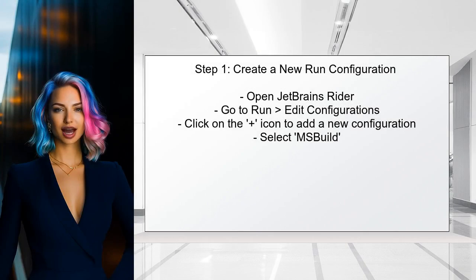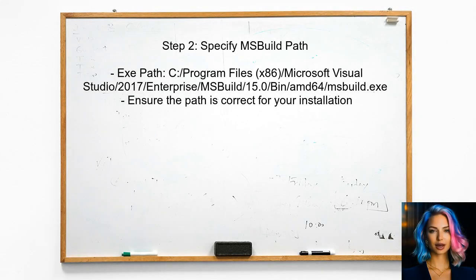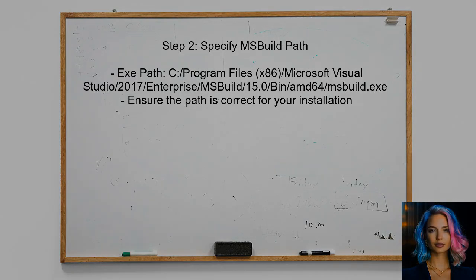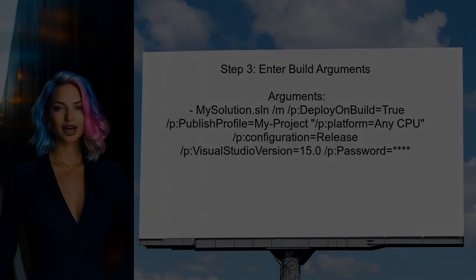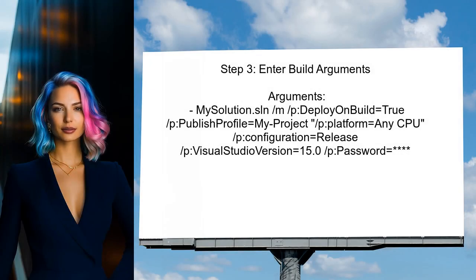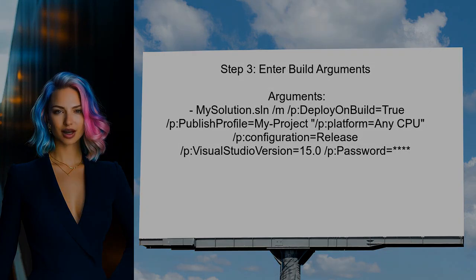To publish a web project from JetBrains Rider, start by creating a new run configuration. This allows for customized build and publish settings. Next, specify the path to the MSBuild executable — this is essential for the publishing process to work correctly. Then enter the necessary arguments for the build and publish process, including the solution file and various parameters.